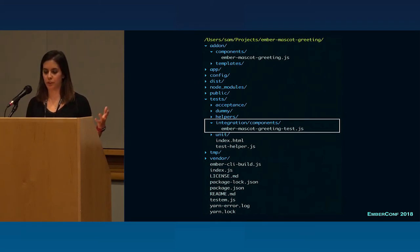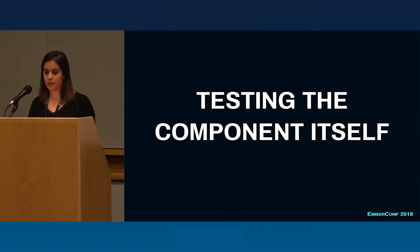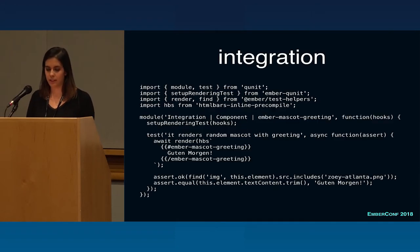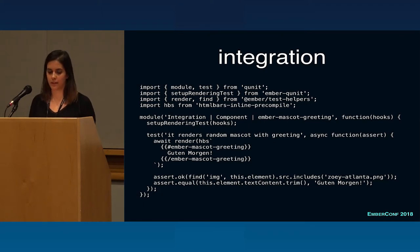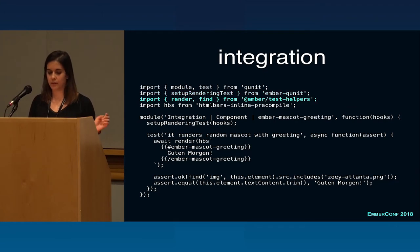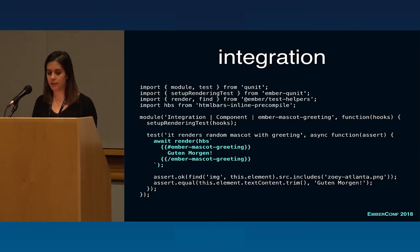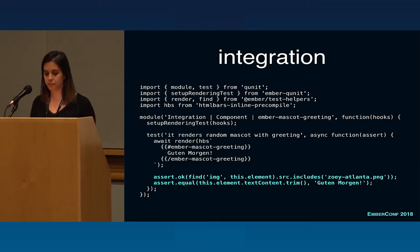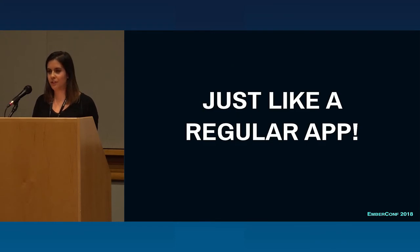If you notice, the test folder is pretty similar to the test folder of a regular Ember app. To test the component itself, we take this integration test, and it's pretty much the same integration test as for a component inside an app. You have access to both QUnit, Ember-QUnit, the test helpers, and HTMLBars precompile. With this, you can just render your add-on and assert that you have the image and the text you wanted. It's just like testing a component inside a regular app.